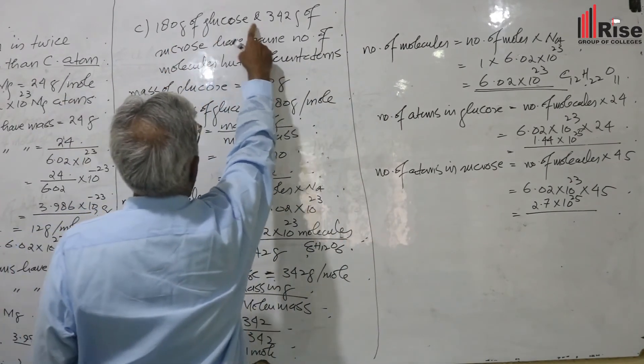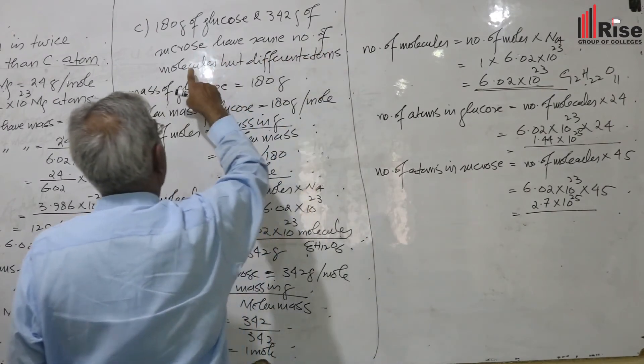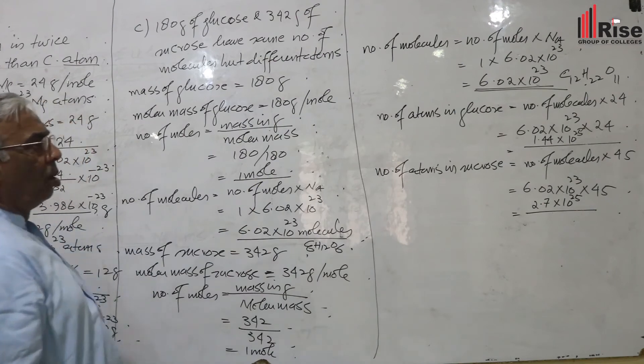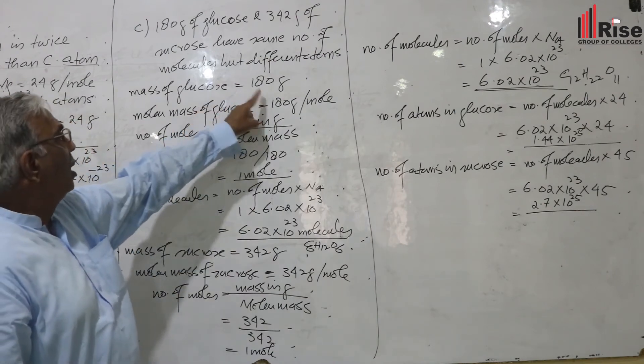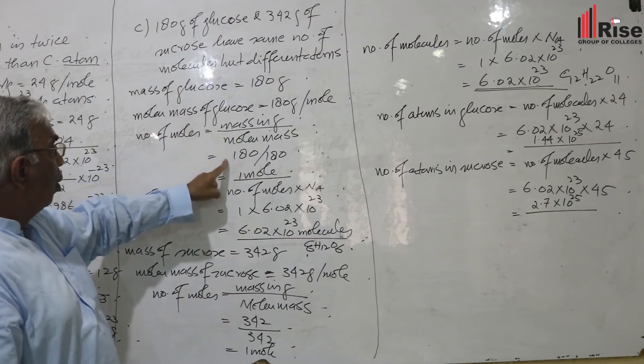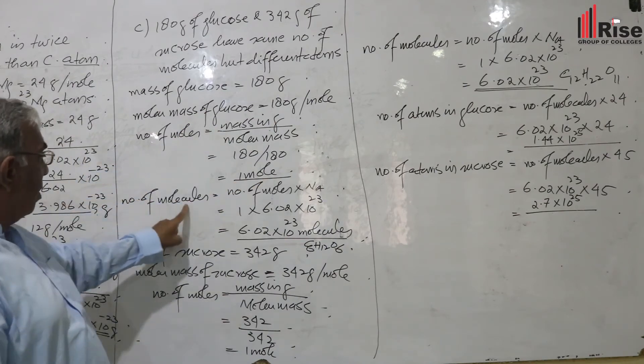180 grams of glucose and 342 grams of sucrose have same number of molecules but different number of atoms. Glucose mass is 180 grams divided by molar mass equals one mole.